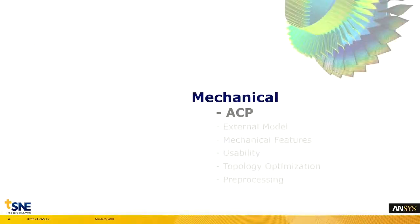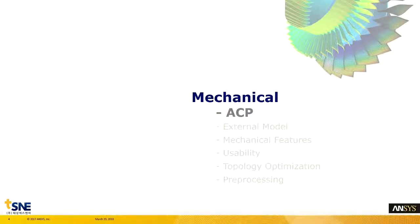우선 Mechanical 파트에 대해서 먼저 알아보도록 하겠습니다. Mechanical 파트는 크게 6가지로 나눌 수 있는데요. 복합재 관련된 ANSYS Composite PrePost에 대해서 먼저 소개 드리고, 이어서 External Model, Mechanical Feature, Usability, Topology Optimization, 그리고 프리프로세싱에 대해서 어떤 부분이 기능이 강화되고 업그레이드되었는지 알아보도록 하겠습니다.